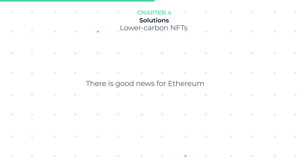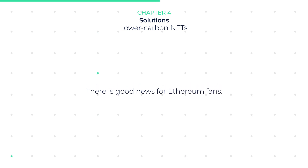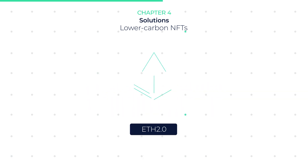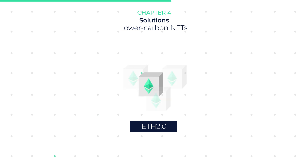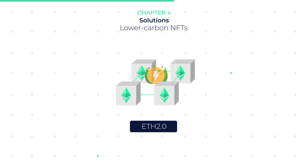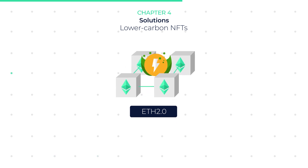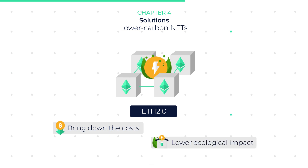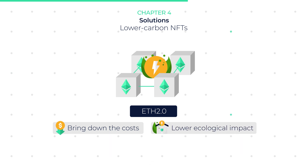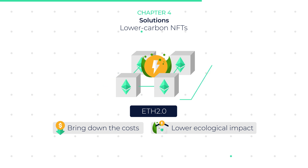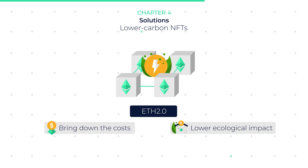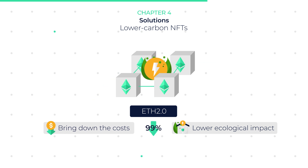However, there is good news for Ethereum fans. With ETH 2.0, a greener proof-of-stake upgrade is proposed for the current Ethereum ecosystem. Ethereum plans to bring down the costs as well as the ecological impact of not just NFTs, but the Ethereum blockchain as a whole, by as much as 99.98%.